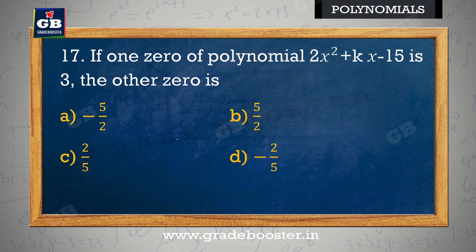If one zero of polynomial 2x² + kx − 15 is 3, the other zero is: yadi polynomial 2x² + kx − 15 ka ek zero 3 hai, to doosra zero hai — a) −5/2, b) 5/2, c) 2/5, d) −2/5.